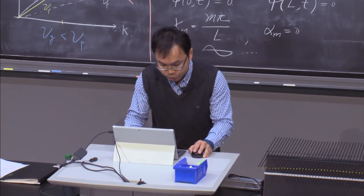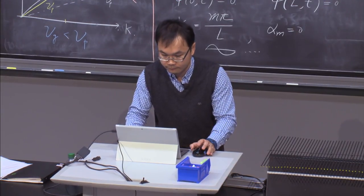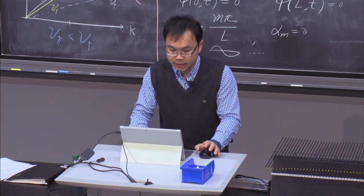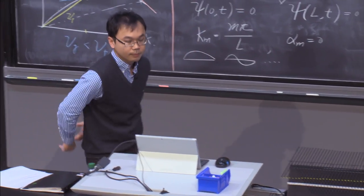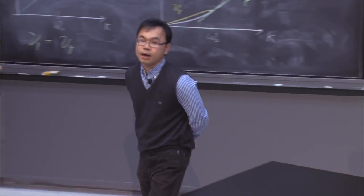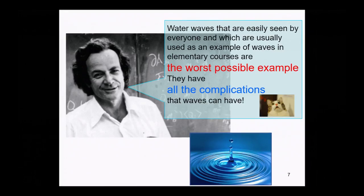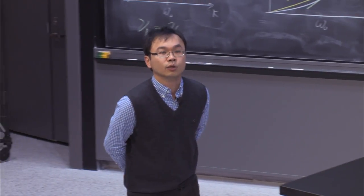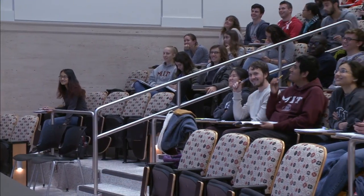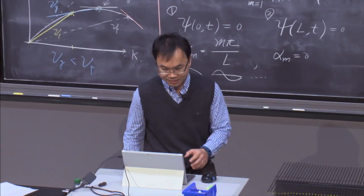Before ending the lecture, I want to discuss two interesting topics. First: water waves. Feynman told us that water waves are easily seen by everybody but are actually the worst possible example, because they have all the possible complications that waves can have. The good news is you'll be able to understand water wave behavior in your problem set.